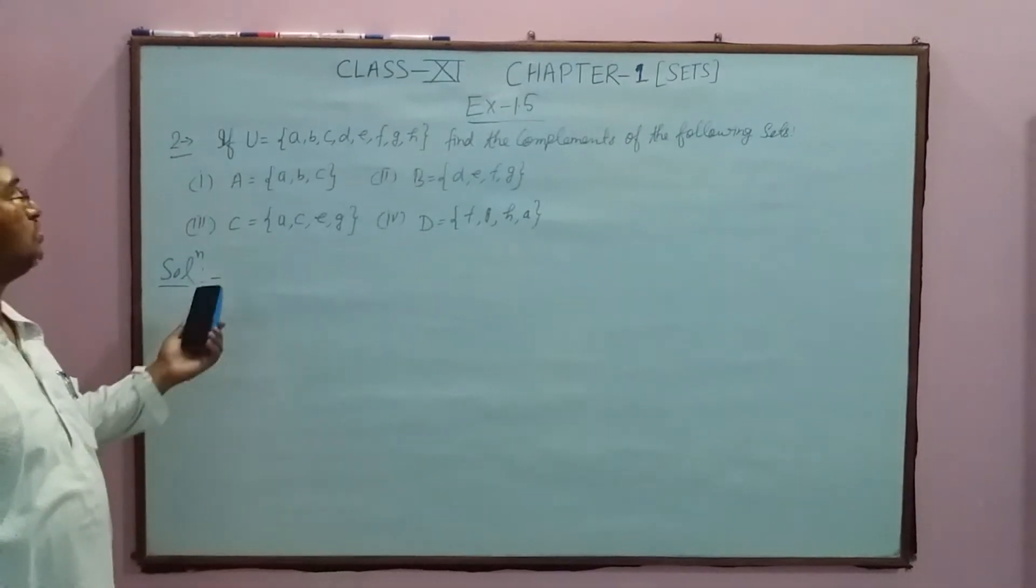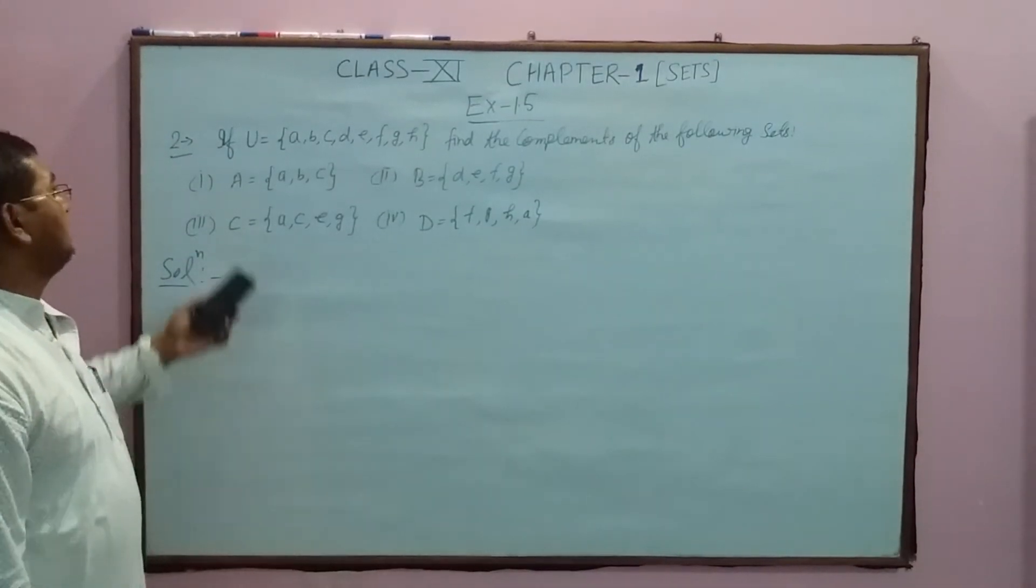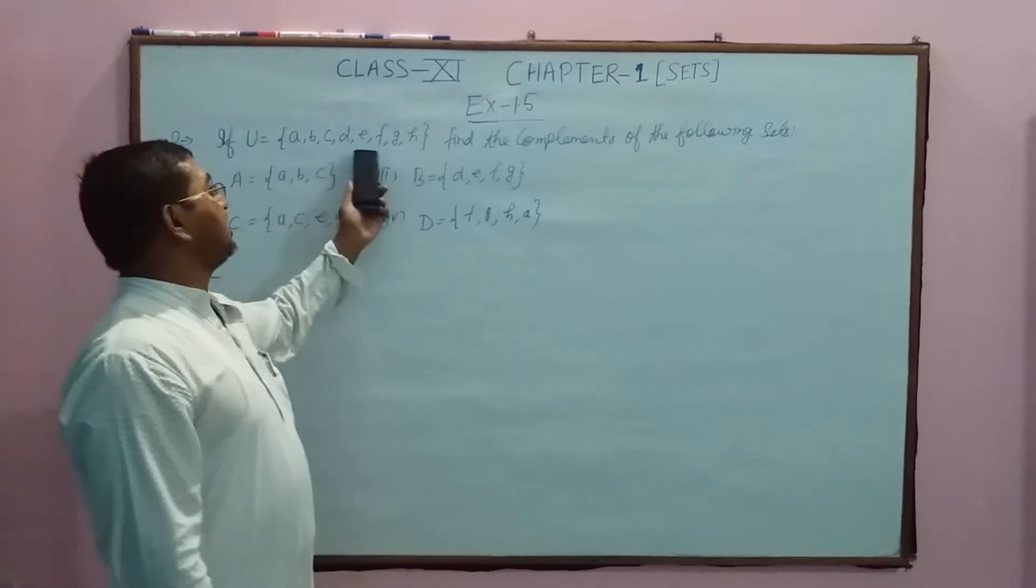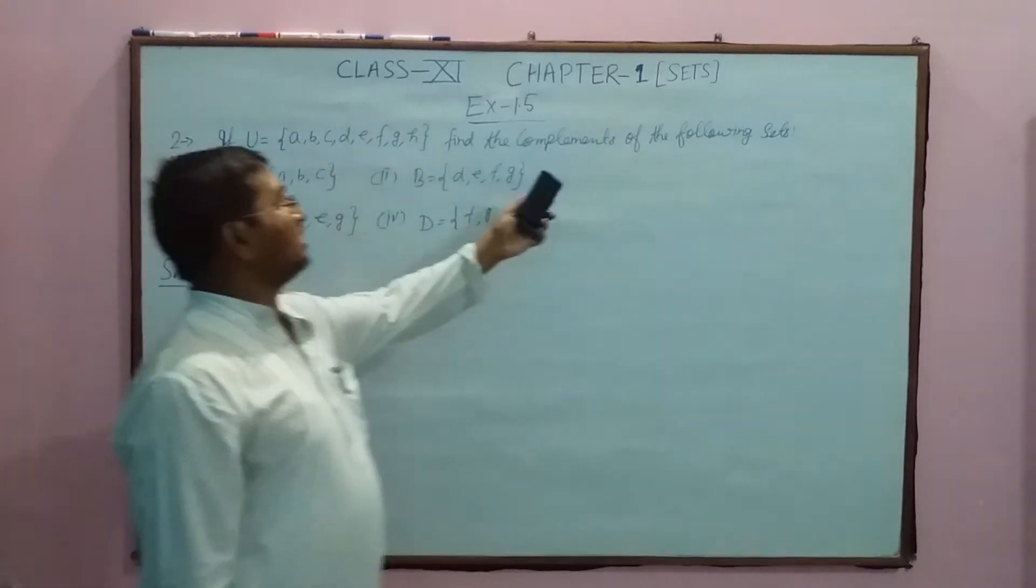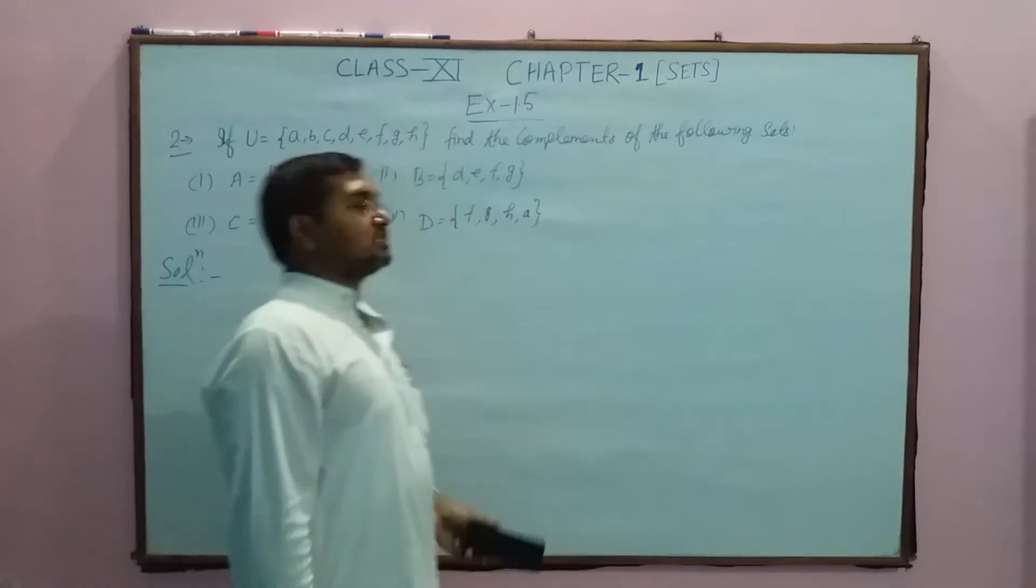Question number two of exercise 1.5: If U equals {a, b, c, d, e, f, g, h}, find the complements of the following sets.